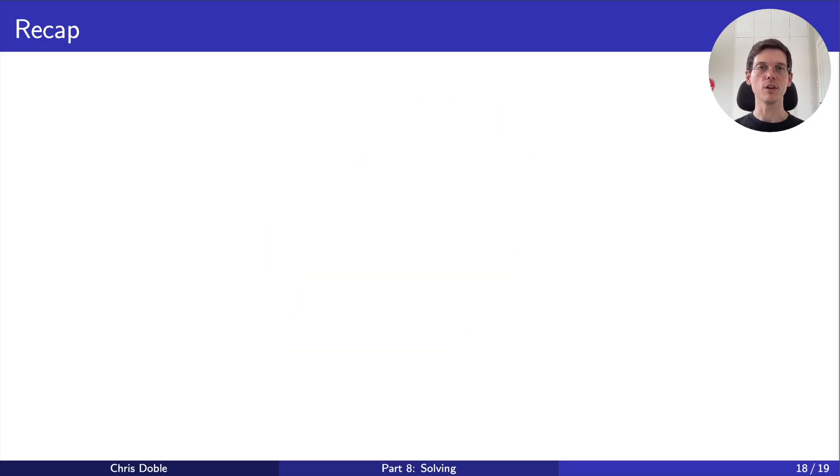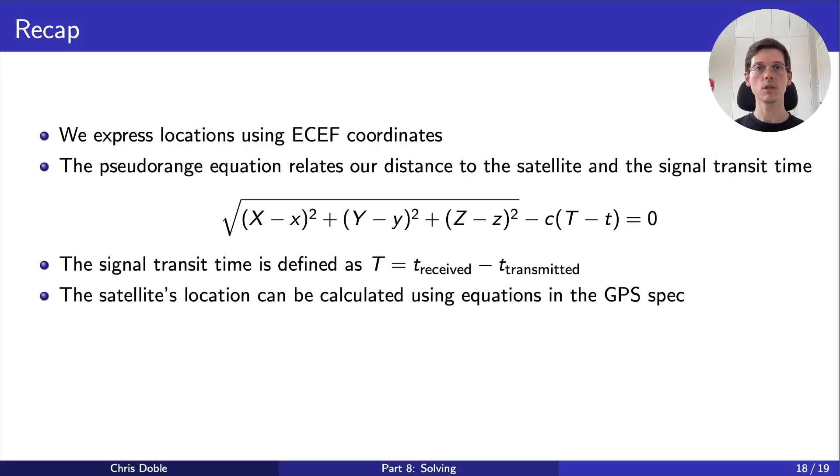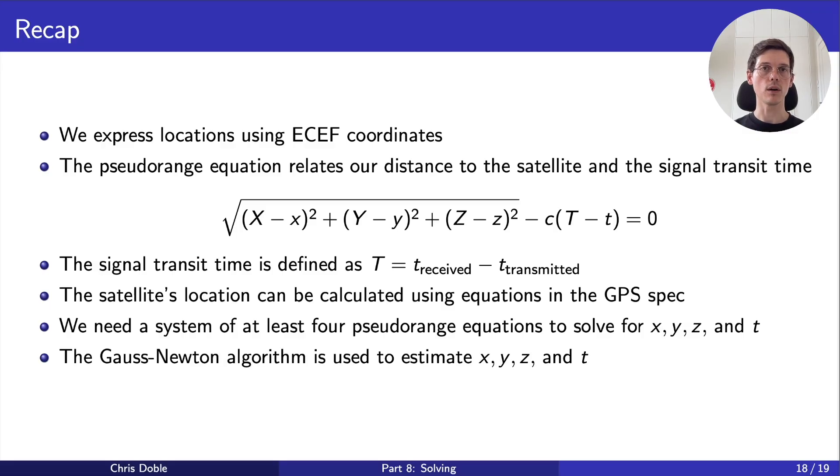Let's recap the important points from this final video. First, we express locations using ECEF coordinates to simplify calculating distances. Second, the pseudorange equation relates our distance to the satellite and the signal transit time. Third, the signal transit time is defined as the time we received a signal minus the time it was transmitted, where those times can be calculated in the ways we discussed. Fourth, the satellite's location can be calculated using the equations in the GPS spec. Fifth, we need a system of at least four pseudorange equations to solve for our location and clock bias. That means we need data from at least four satellites. And finally, the Gauss-Newton algorithm is used to solve that system, giving us an estimate of our location and clock bias.